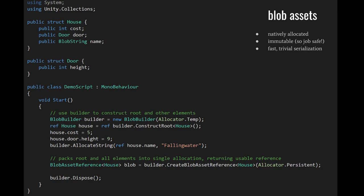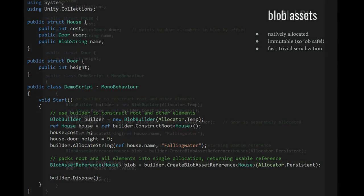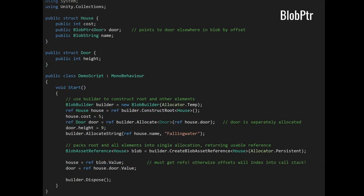Now that we have a blob asset reference, we can read its data and store this reference in components. The blob asset reference itself is a blittable type, so you can store it in regular entity components. In another example using a blob pointer, blobPtr, instead of the root house directly containing the door struct, it contains a pointer to a door — a blob pointer is just an offset pointing to elsewhere in the blob. So our blob this time contains three elements: the root house, the character data of the name string, and the door struct. We create our builder and construct its root, but to set the door field, we call the builder's allocate method, passing a ref to the door field of our root house, and get back a reference to a door struct which we can then set up.